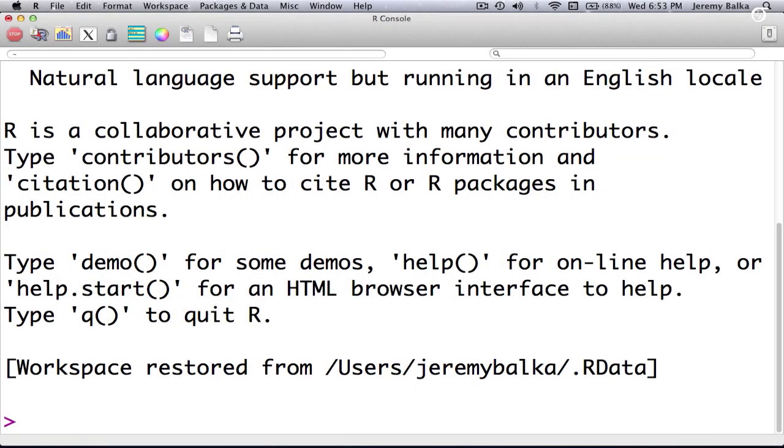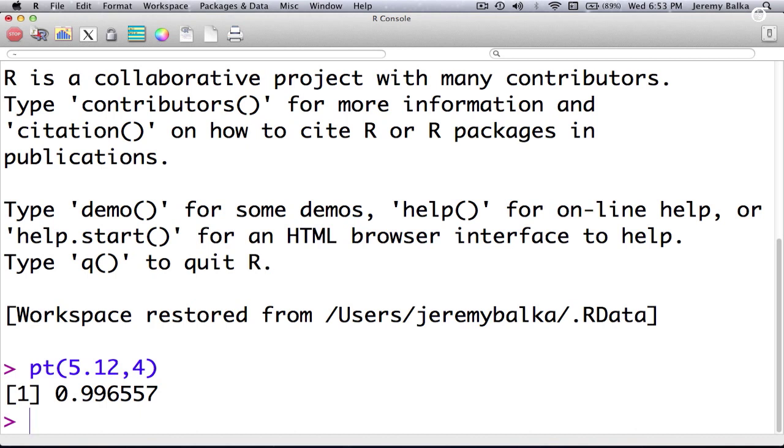Here is the wonderful and free statistical computing package R, and it has a command PT which gives areas to the left of the value we look up under our t-distribution. So if we put PT(5.12, 4), we're going to get the area to the left of 5.12 under a t-distribution with four degrees of freedom.